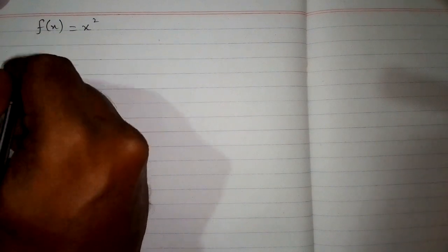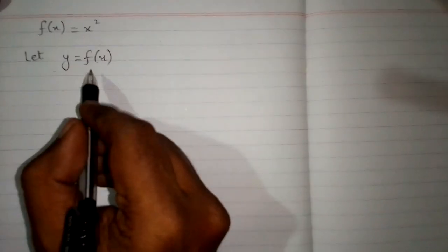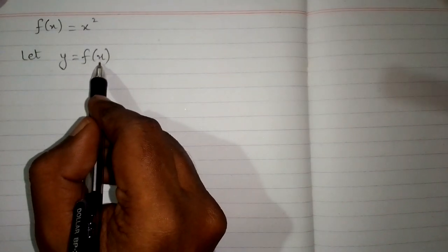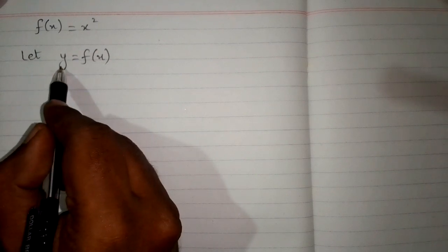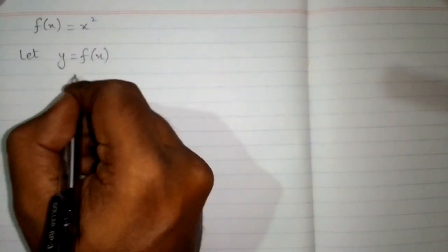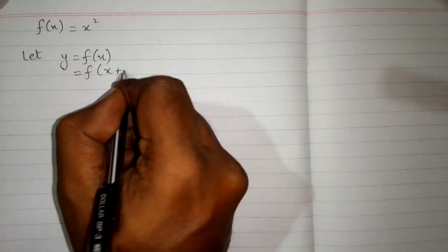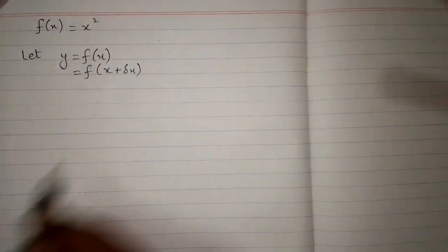In this video we will differentiate x squared by using the first principle. The function is f of x equals x squared. First, let y equal f of x. If there is a small change in x, there will be a small change in y. Suppose the small change in x is delta x, so we will add delta x to x.